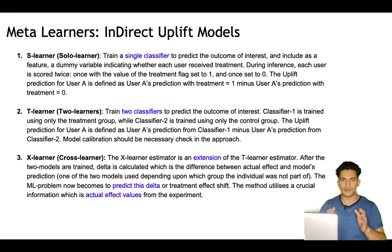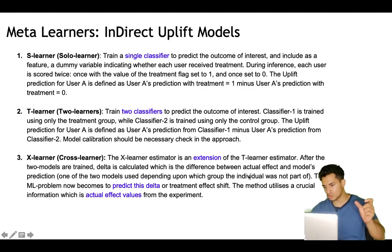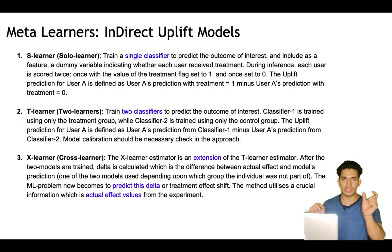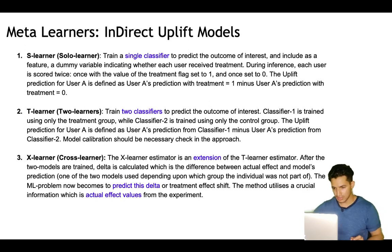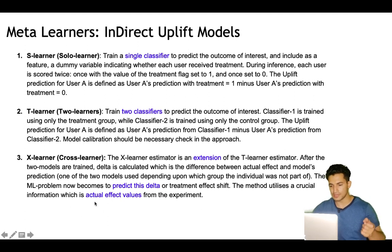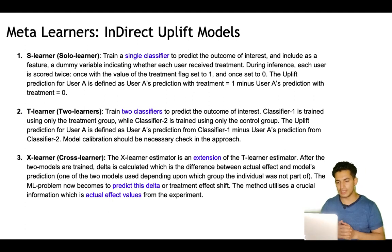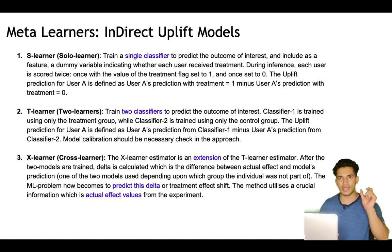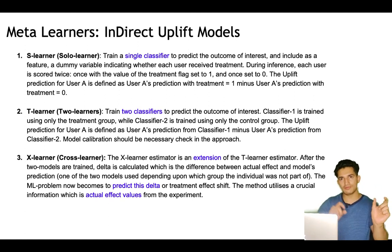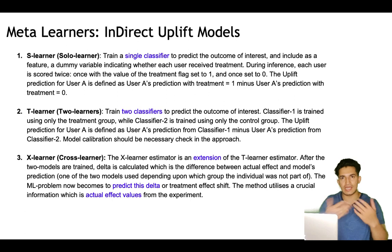The third estimator is the X-learner, an extension of the T-learner. After the two T-learner models are trained, an extra step is taken where delta is calculated between the actual effect and the model's prediction. If the user was part of treatment, the control model prediction is used; if the user was part of control, the treatment model prediction is used. The ML problem now becomes to predict the delta or treatment effects, utilizing a crucial piece of information: the actual effect value from the experiment.